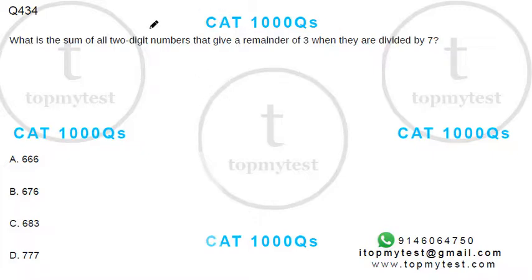Okay, this one says what is the sum of all two-digit numbers that give a remainder of 3 when divided by 7? So one such number is 3, but it's not a two-digit number. Then you have 10, that's fine, then 17.